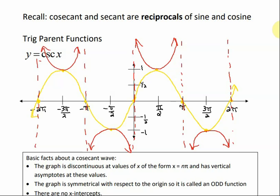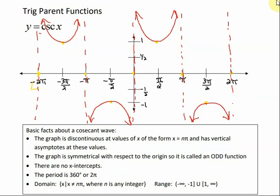The yellow sine curve was just to help us sketch the graph — we can take that away. This is the graph of cosecant. Some facts about the cosecant wave: the graph is discontinuous at values of x of the form x equals n times pi, and it has vertical asymptotes at these values. The graph is symmetrical with respect to the origin, so it's called an odd function — meaning if we rotate it 180 degrees, it would look the same. There are no x-intercepts.